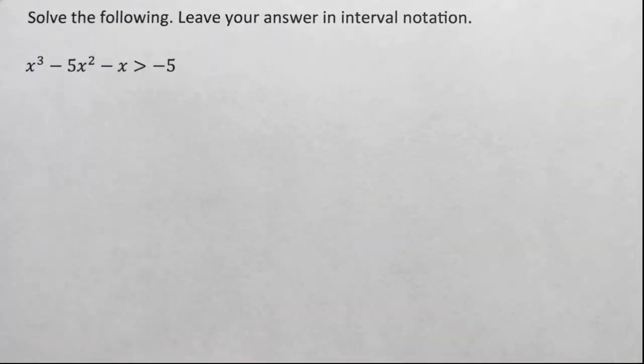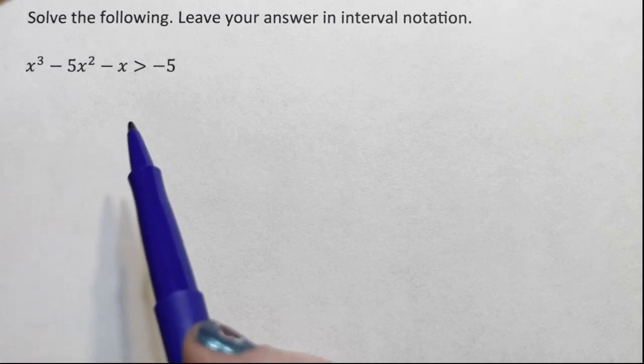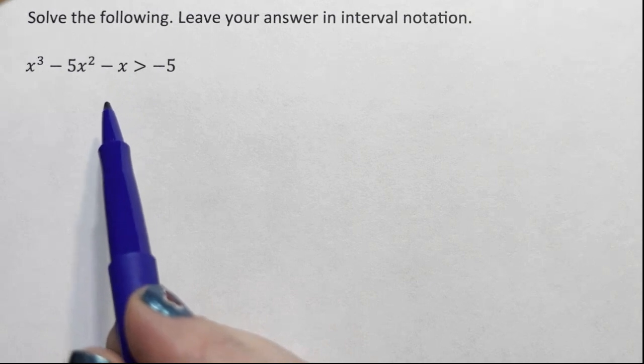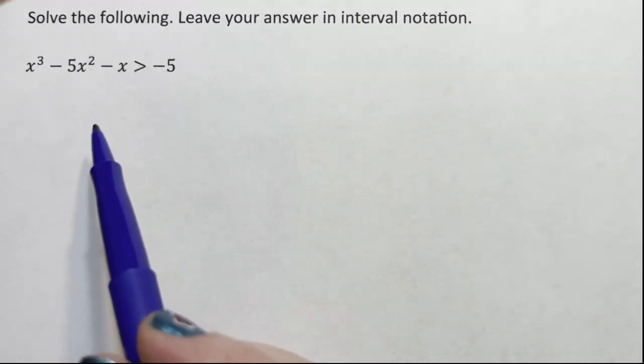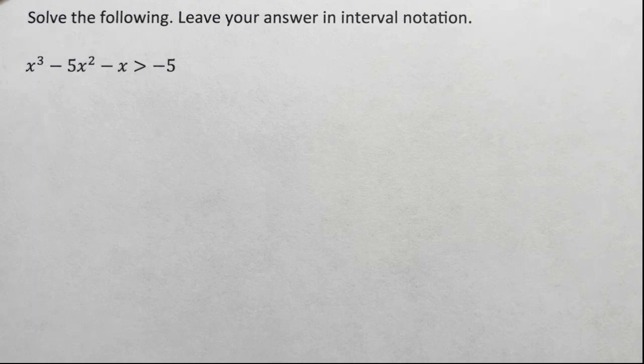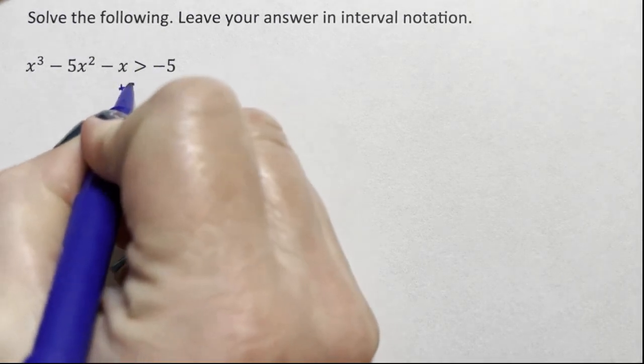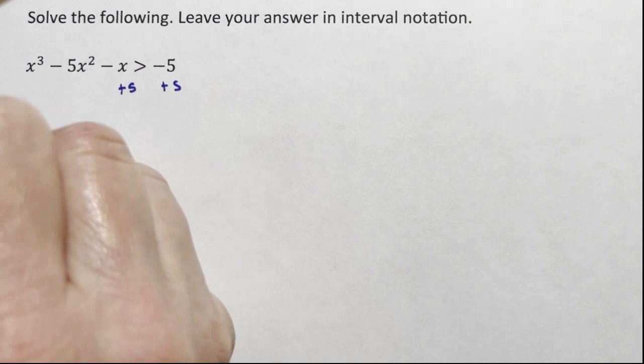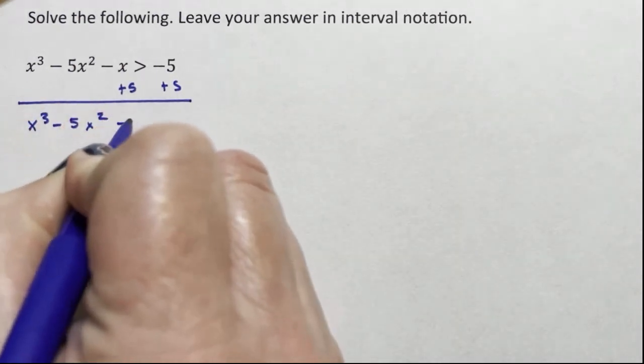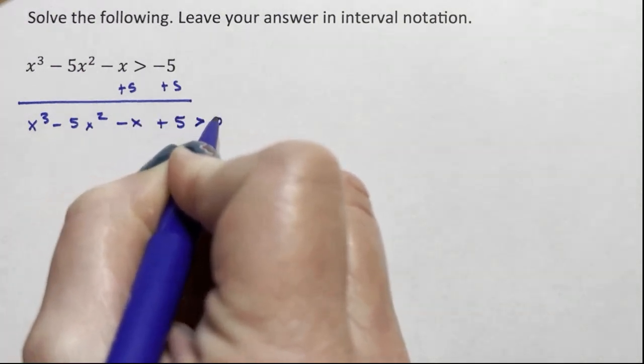This cubic means we're looking for three solutions to this polynomial. If it was an equal sign, it would be pretty simple. Just factor or do one of our other myriad of tricks of solving. With an inequality, it's a little more complicated. I'm going to start off pretending I have an equality because equalities are simpler. I'm going to add the 5 over because you cannot solve until it equals 0. x cubed minus 5x squared minus x plus 5 is greater than 0.